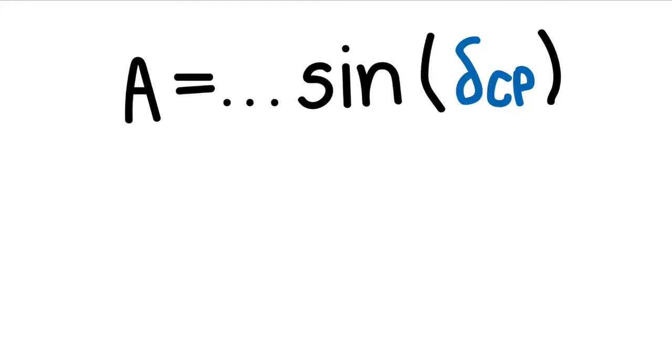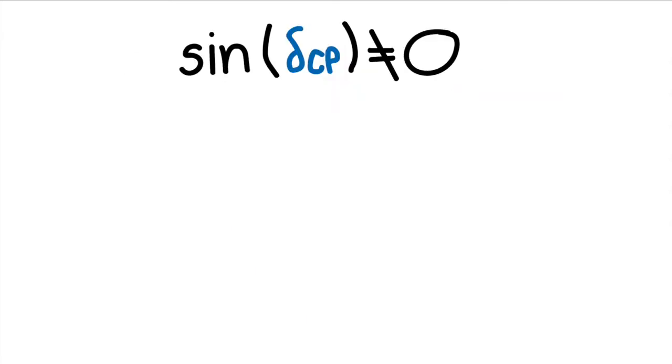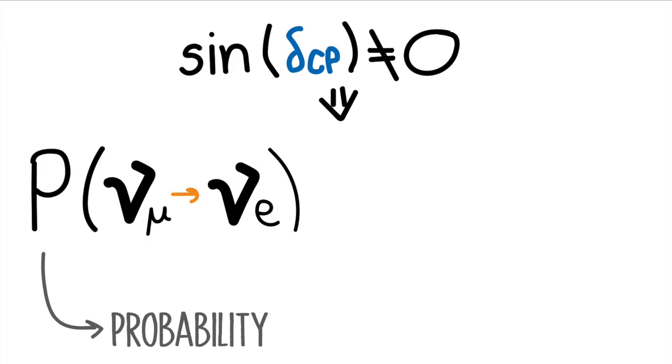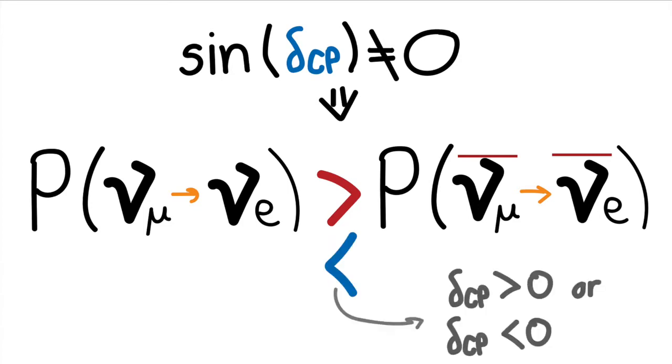But how are neutrinos going to help answer the matter-antimatter asymmetry problem? In the oscillation constants, there is a phase parameter called delta CP. We can just think of this as an angle — it appears in the argument of a sine function. If delta CP is different from zero, pi, or two pi — that is, if the sine is different from zero — muon neutrinos oscillate to electron neutrinos a little bit more than muon anti-neutrinos oscillate to electron anti-neutrinos, or a little bit less, depending on whether delta CP is positive or negative.